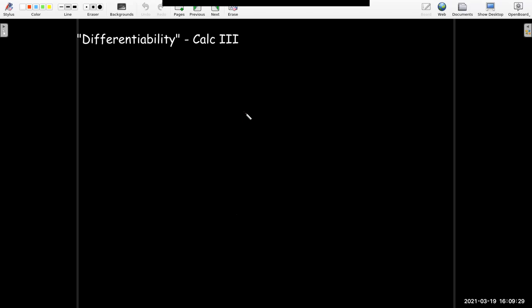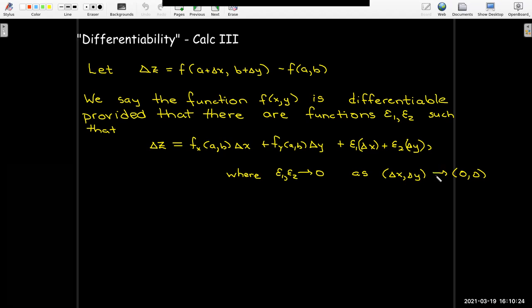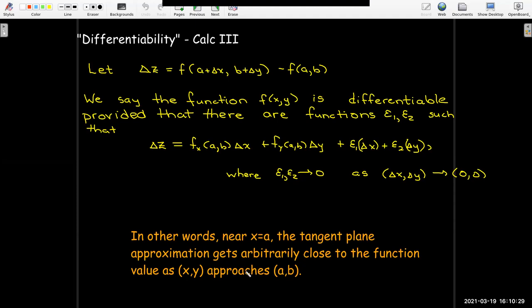Calc 3, it's very similar. We're going to have Δz be the change in the function value as you go a little bit away from a and a little bit away from b. So you're going to move a little bit Δx, a little Δy. That's going to give you my change in the surface value. And we're going to say that the function of two variables is differentiable, provided that we've got two error functions, such that the change in z can be expressed as the change from the tangent plane plus these error functions. And we'll say it's differentiable if these error functions go to zero as we get closer and closer to the particular point.